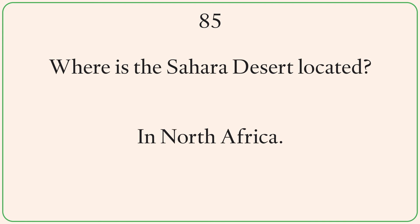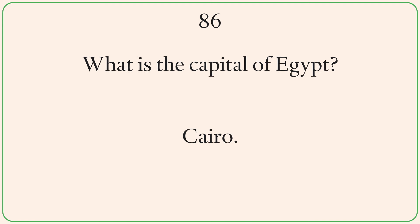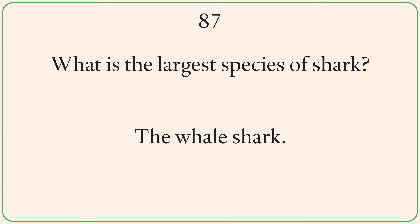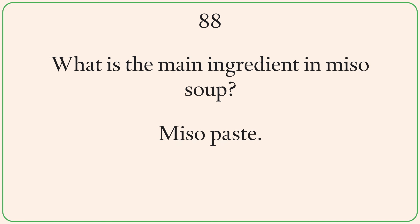Where is the Sahara Desert located? In North Africa. What is the capital of Egypt? Cairo. What is the largest species of shark? The whale shark. What is the main ingredient in miso soup? Miso paste.